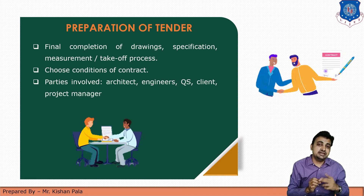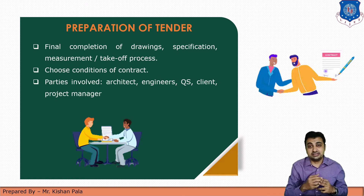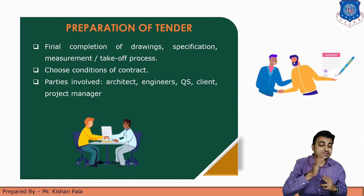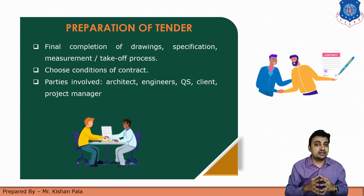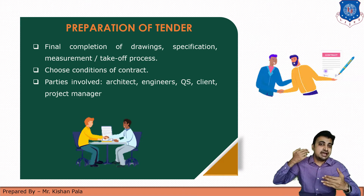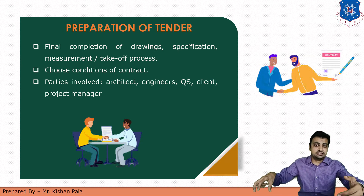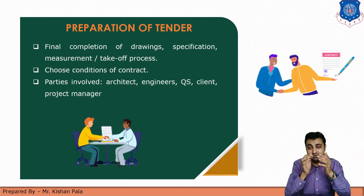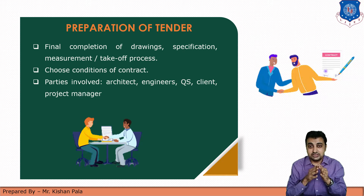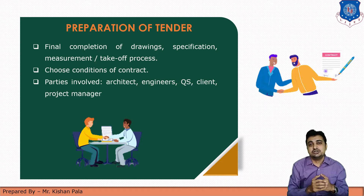The second point to consider in this stage is choosing the conditions of the contract — you have to define the general conditions and the special conditions. The next consideration is parties involved: which stakeholders are involved in that work — such as architect, engineer, QS, client, project manager. For example, if you are a contractor doing that work but the client wants inspection by a third party, then all those stakeholders should be mentioned in the contract. There should be certainty of all the requirements to complete that work, so there are fewer chances of dispute.